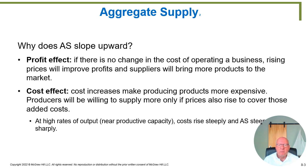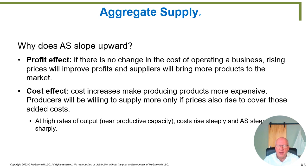The cost effect says: what if costs are increasing, making products more expensive? Then, if you are a business person, you would only be willing to produce more goods and services if you could charge a higher price. Either way, business people want to produce more at higher prices than at lower prices. That's true for individual businesses in a micro market, and it's also true for all businesses as a group in the macro market.